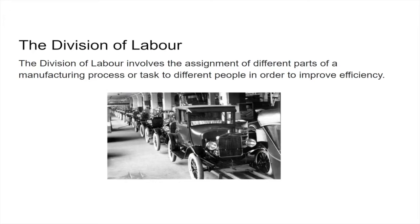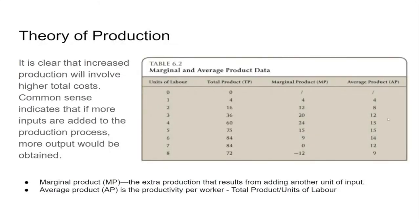One of the ways that we can increase productivity is through the division of labor. We've seen that if you can split a job into its key components, and people work in each of those key components and do a very good job at that, we can get higher productivity. We've seen that division of labor illustrated with a table where we have a growing number of units of labor, going from zero to eight. If we don't have anyone working, we don't make any product.